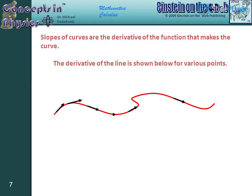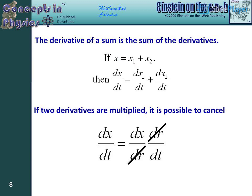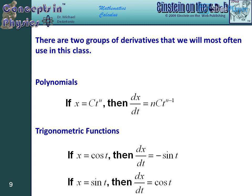Slopes of curves are the derivative of the function that makes the curve. The derivative of the line is shown below for various points. The derivative of a sum is the sum of the derivatives. If two derivatives are multiplied, it is possible to cancel. There are two groups of derivatives that we will most often use in this class: polynomials and trigonometric functions.